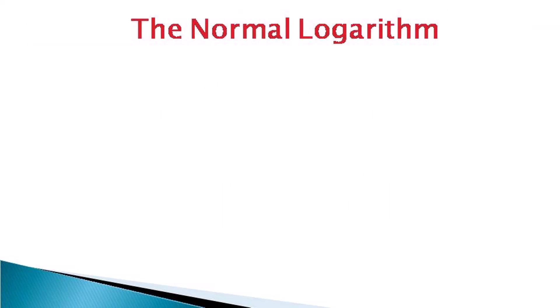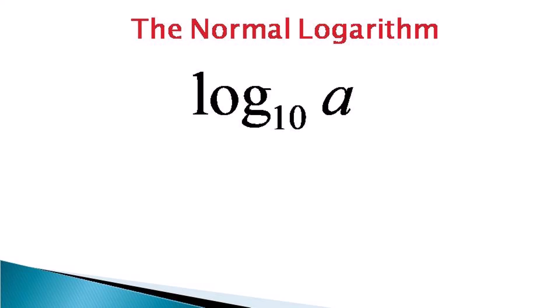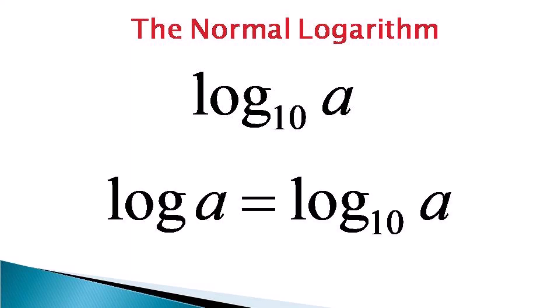There are some other types of logs, like the normal logarithm. The normal logarithm means the log of a number taken to base 10, written as log of a to the base 10. Whenever it is written simply as log of a, it means log of a to the base 10. Whenever the base is not written, it always means the log is the normal log with base 10.